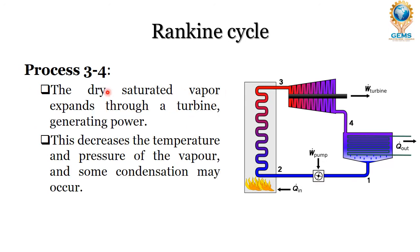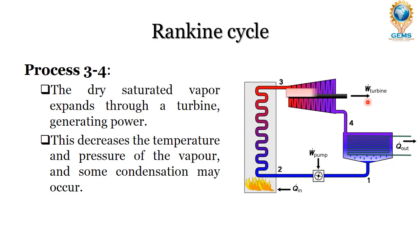In process 3 to 4, the dry saturated vapor expands through a turbine, generating power coupled with the turbine. This decreases the temperature and pressure of the vapor and some condensation may occur. It is a turbine work process where the expansion occurs, and during this expansion the pressure and temperature get decreased.